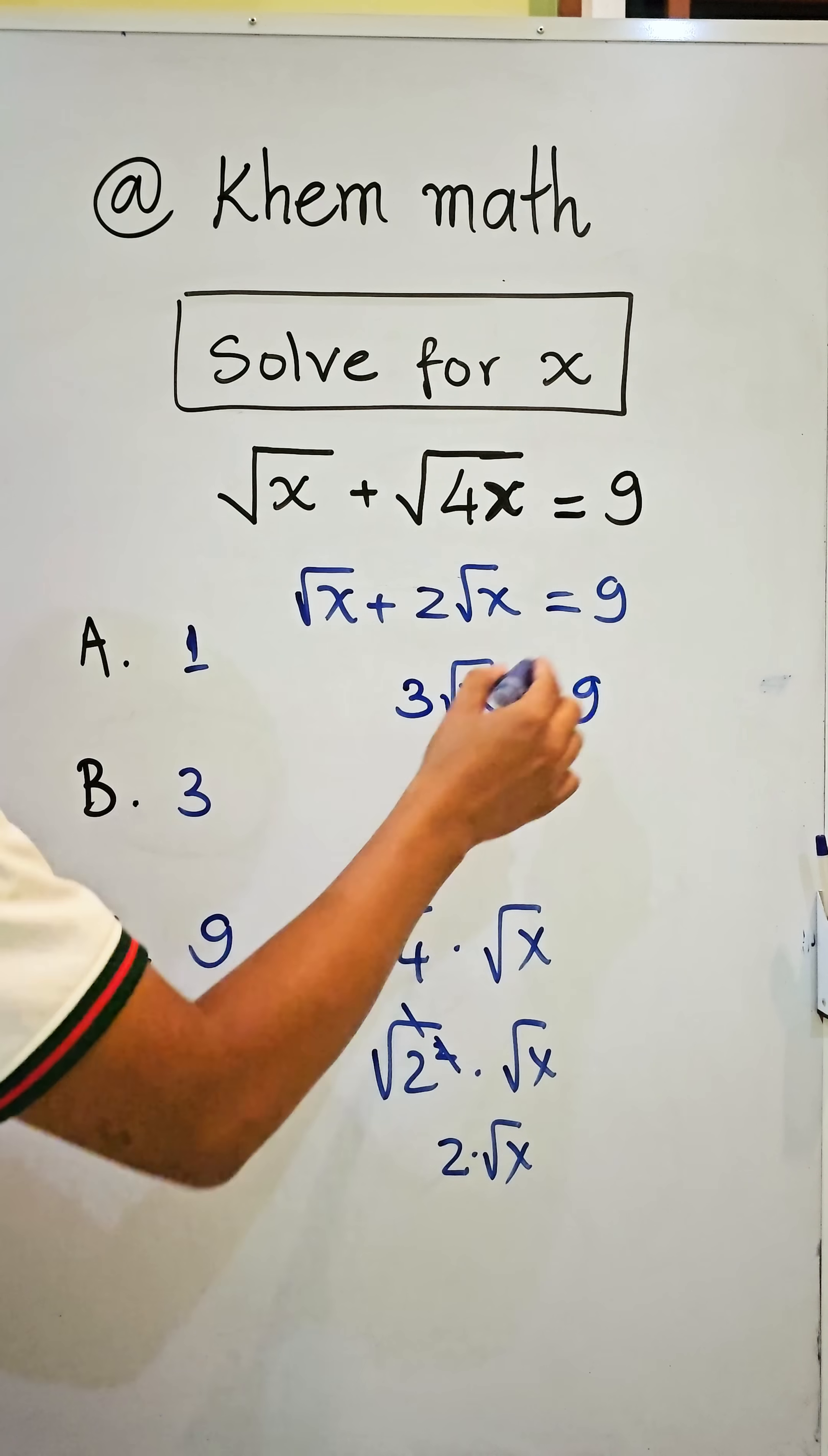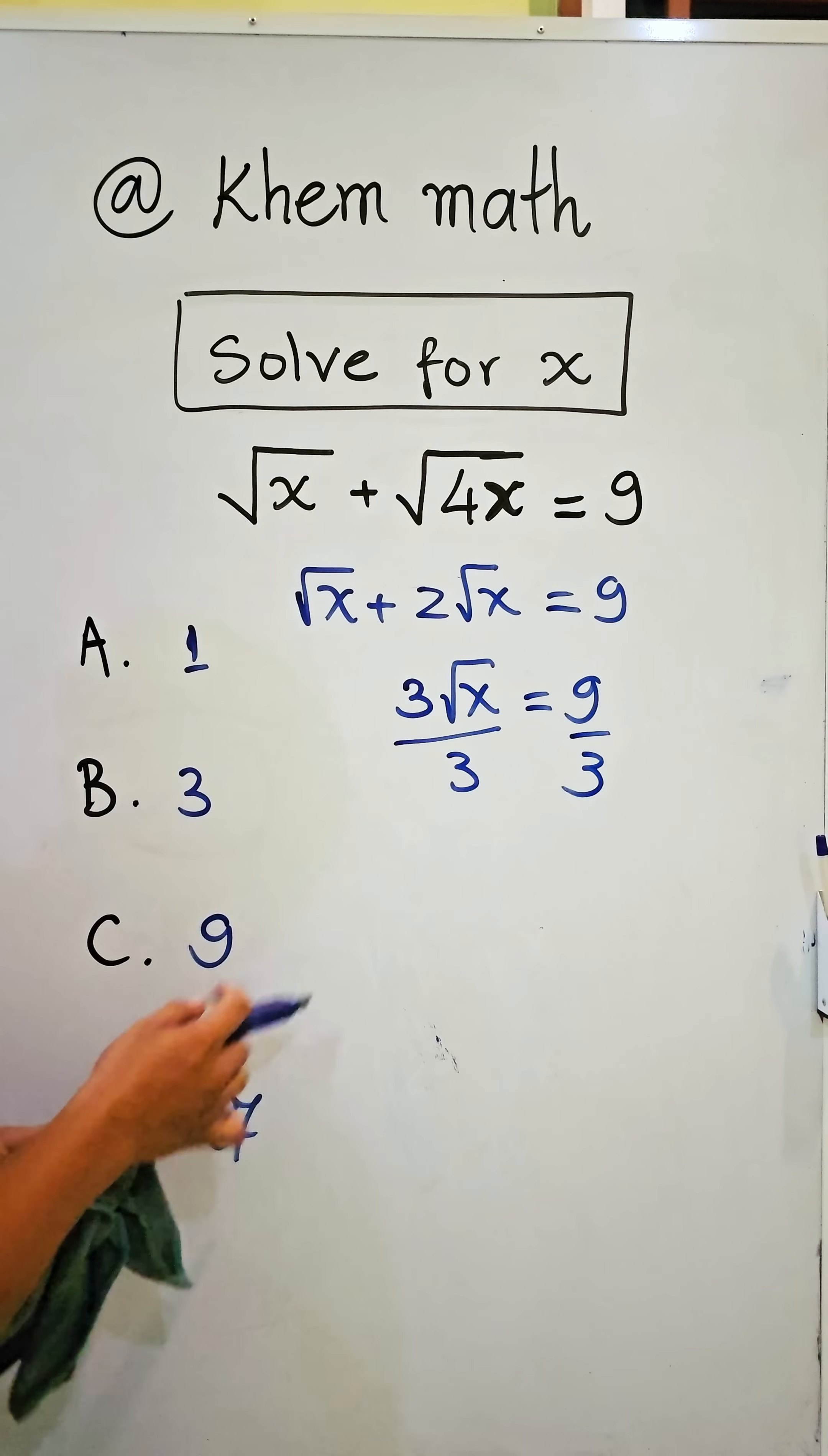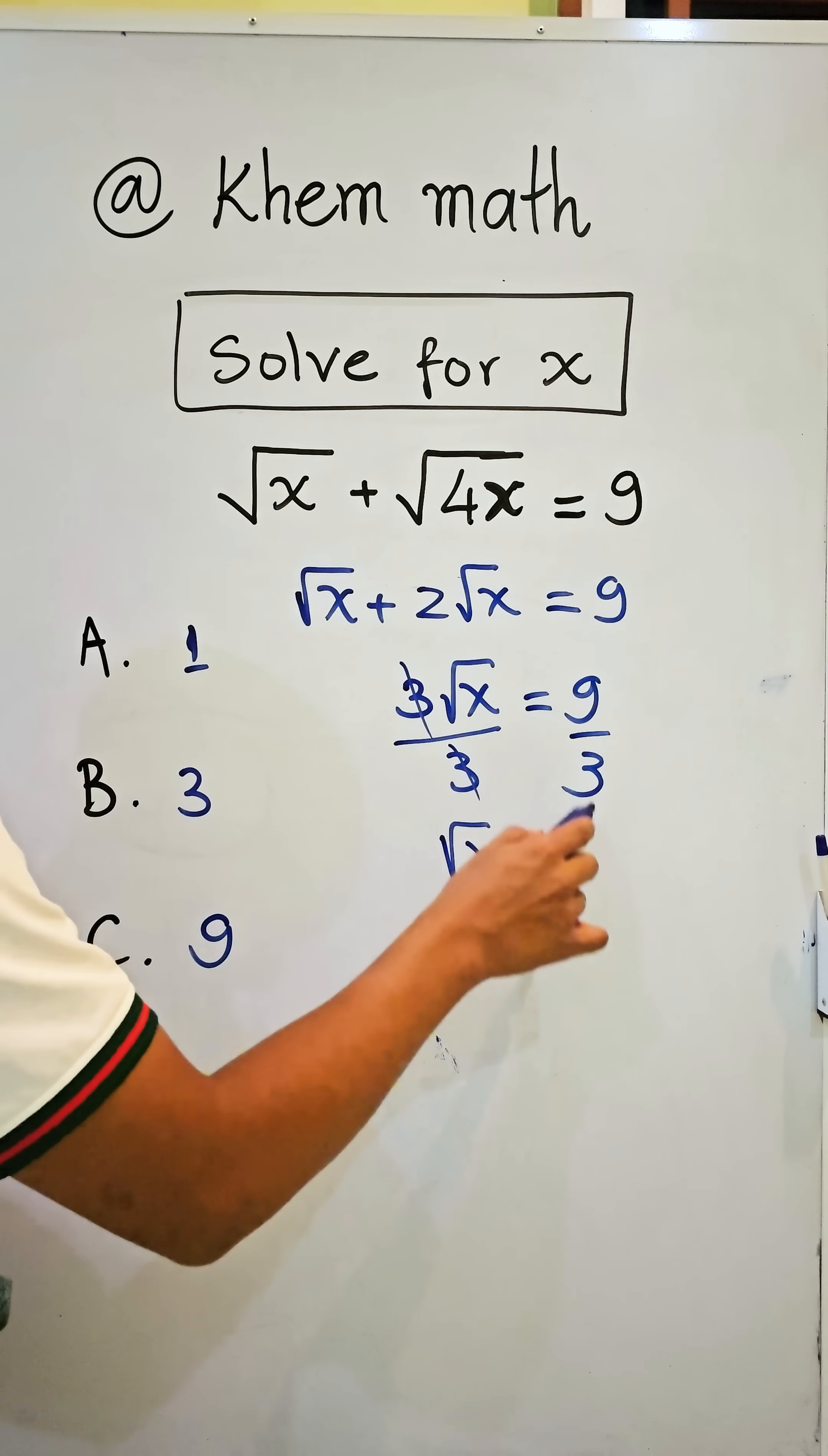We divide both sides of this equation by 3, so it's equal, here we simplify 3, we get square root of x equals 9 divided by 3, we get 3.